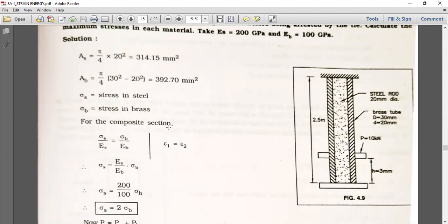As, area of steel, equals pi by 4 d square equals 314.15 mm square. Similarly for brass, Ab, using the same formula with different diameter, we can get the total area of brass, which is 392.70 mm square. As I said, S stands for steel and B stands for brass.